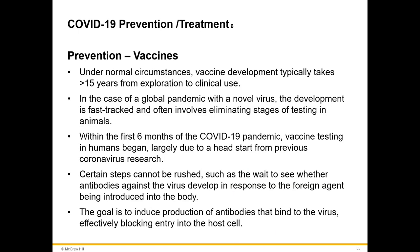Under normal circumstances it takes more than 15 years to develop a vaccine, but given this emergency, over 100 vaccines were in development within the first couple months after the public health emergency declaration. Human trials started right away, and there is a front runner from Pfizer that looks promising and is being put on the market.